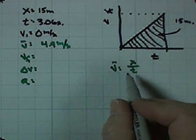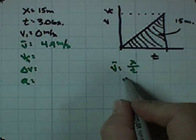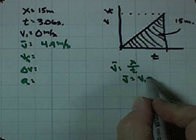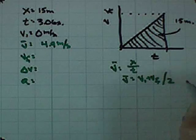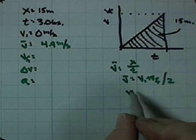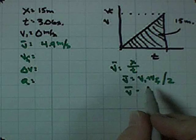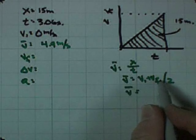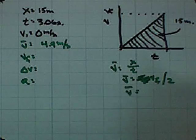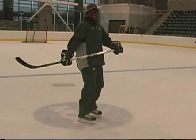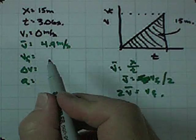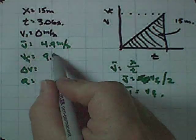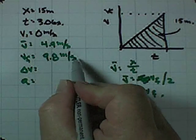Well, final velocity. Average velocity is velocity initial plus velocity final divided by 2. So, 2 times average velocity equals velocity initial plus velocity final. Velocity initial is zero, so 2 times average velocity equals velocity final. That gives us a final velocity of 9.8 meters per second.